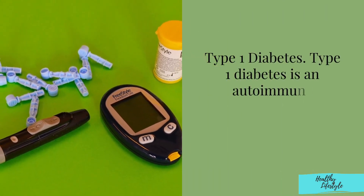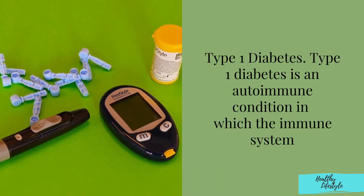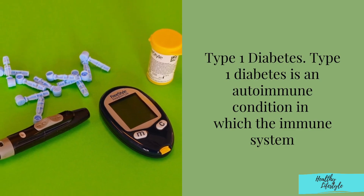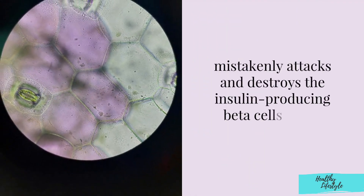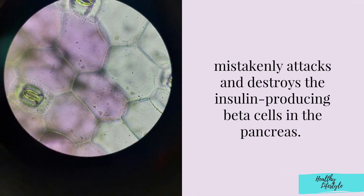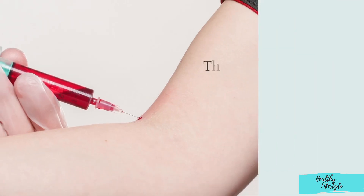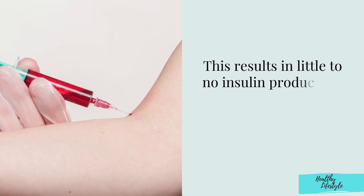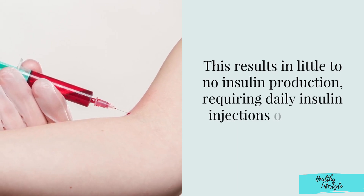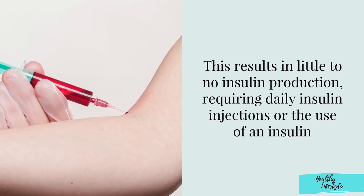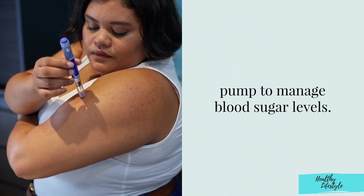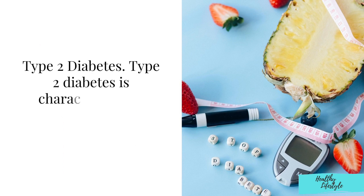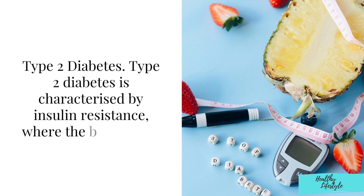Type 1 diabetes is an autoimmune condition in which the immune system mistakenly attacks and destroys the insulin-producing beta cells in the pancreas. This results in little to no insulin production, requiring daily insulin injections or the use of an insulin pump to manage blood sugar levels.